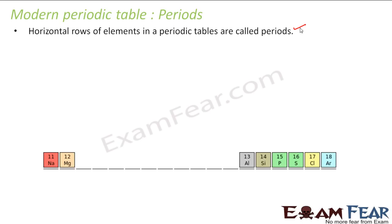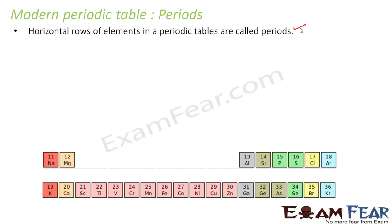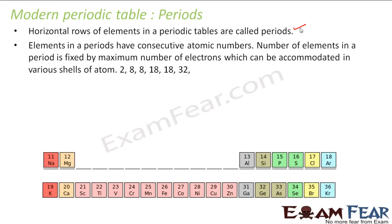Elements in a period have consecutive atomic numbers — for example, 11, 12, 13, 14, 15, and so on. The number of elements in a period is fixed by the maximum number of electrons that can occupy the valence shell.